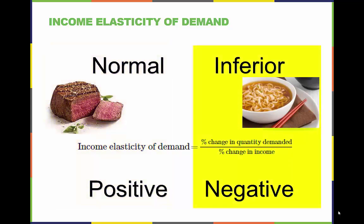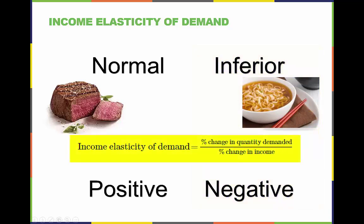Products and services that have negative income elasticity of demands are termed inferior goods and services. This is the equation for calculating the income elasticity of demand. It is important to remember that the equation is calculated fundamentally the same as other elasticity coefficients, except in this case we use income amounts in the denominator.